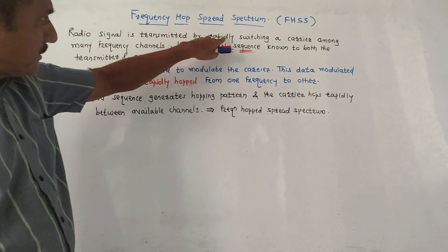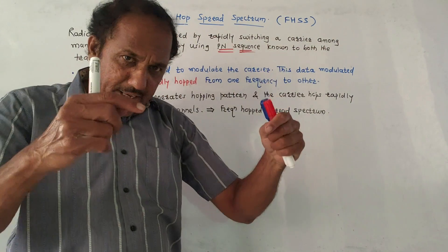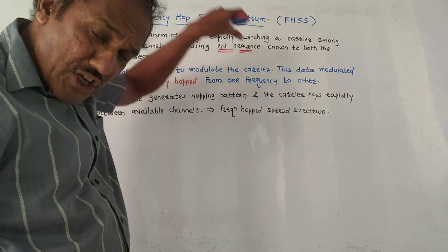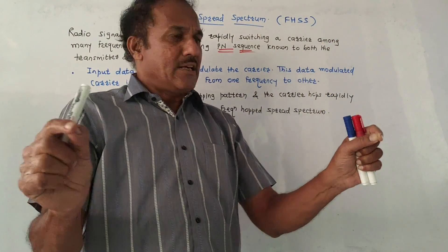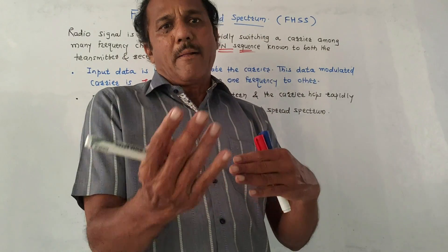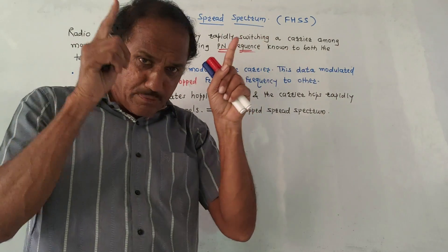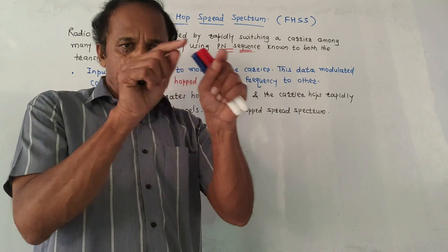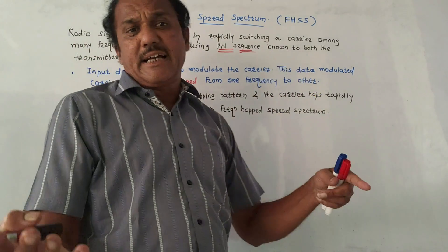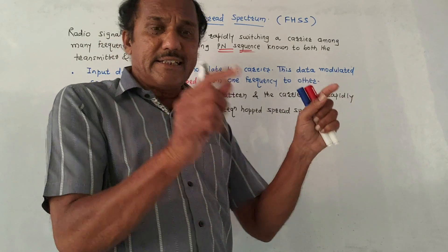A radio signal is transmitted by rapidly switching a carrier among many frequency channels. The carrier rapidly switches among different frequency channels. For that we will be using a PN sequence, so the PN sequence will decide how rapidly and by which logic this hopping — that is, changing — will take place. This PN sequence must be known in advance to both the transmitter and receiver. For how to generate a PN sequence, please refer to video number one of this unit, that is, concept of spread spectrum.